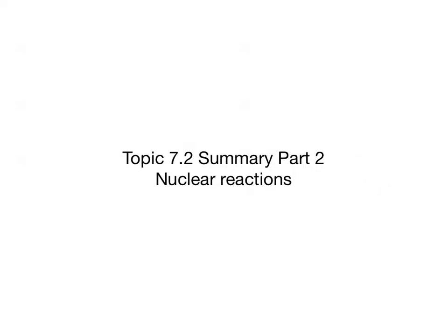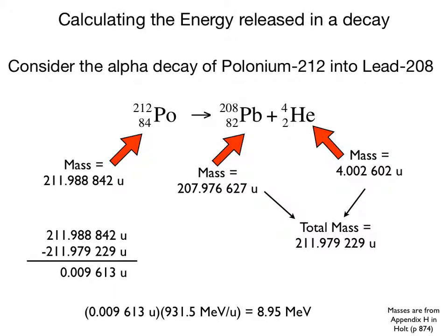Topic 7.2 Summary, Part 2: Nuclear Reactions. When a nucleus decays, the total mass of the daughter nucleus plus the emitted particle is less than the mass of the parent nucleus. The loss in mass is released as energy, as determined by Einstein's E equals mc squared. An easier way to calculate the energy released is to calculate the mass defect, then use the conversion factor of one atomic mass unit equals 931.5 megaelectron volts.